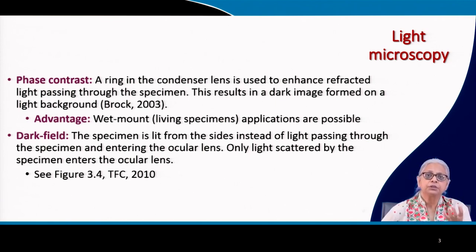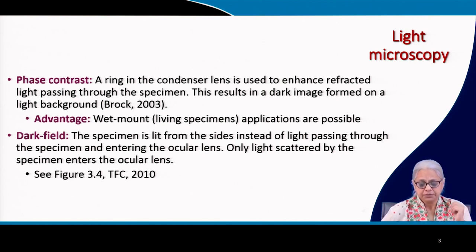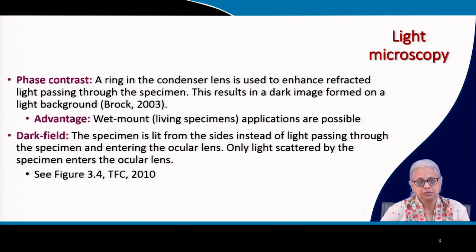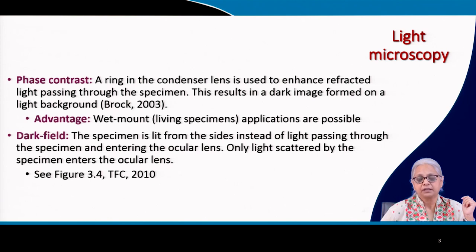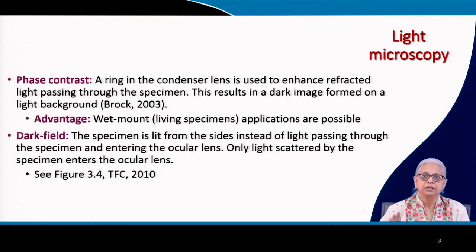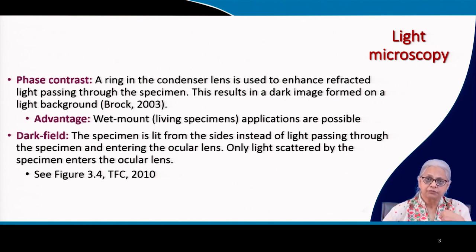What happens in this case is we are utilizing the differences in refractive indices of the different parts of the cell to create an image. This results in greater differentiation of internal structures. The biggest advantage is that the outer covering or pellicle of the cell is clearly visible. In bright field you have a light pellicle against a light background, so it is not very clear. In phase contrast, you have a dark background and a light-colored pellicle. Also, one advantage is that wet mount applications are possible, so you do not have to use dry mount, which can distort cell features.